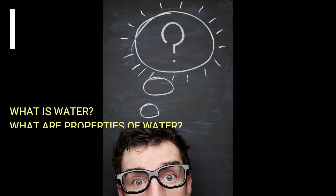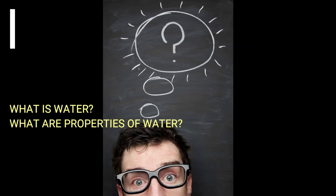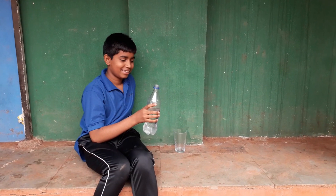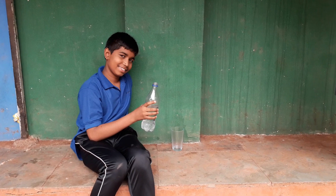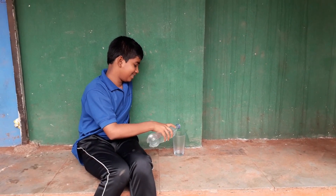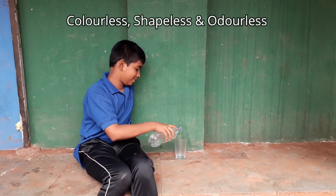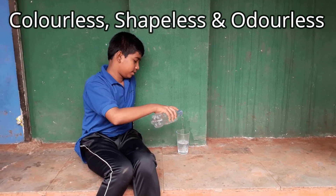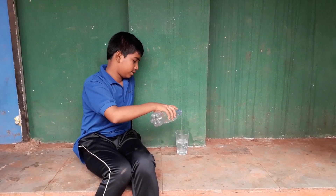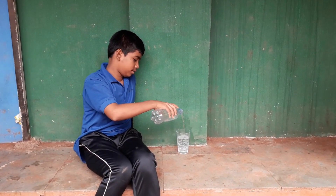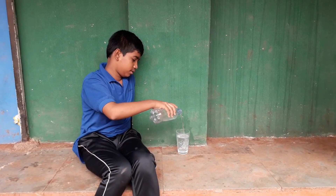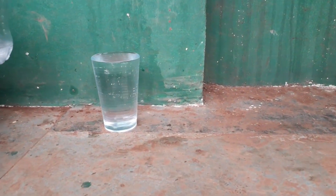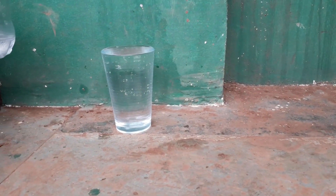Do we know what water actually is and what are its different properties? If not, let's get started. Very basic properties of water are being colorless, shapeless, and odorless. When water is in a bottle, it takes the shape of the bottle. When it transfers into a glass, it will take the shape of the glass.